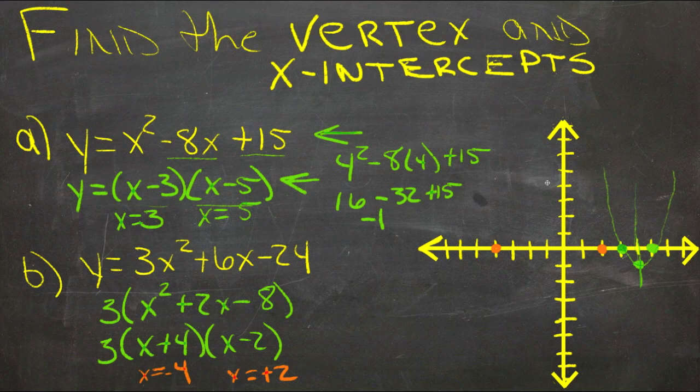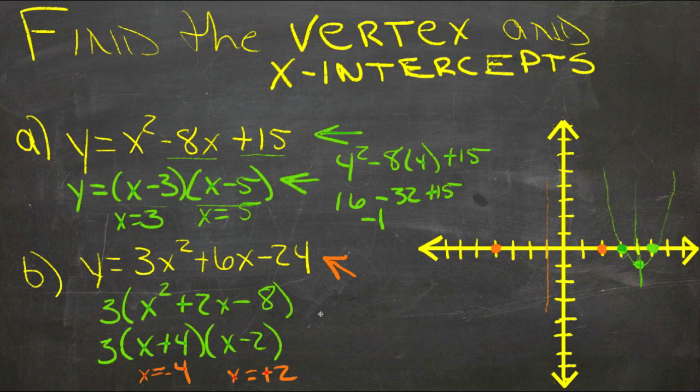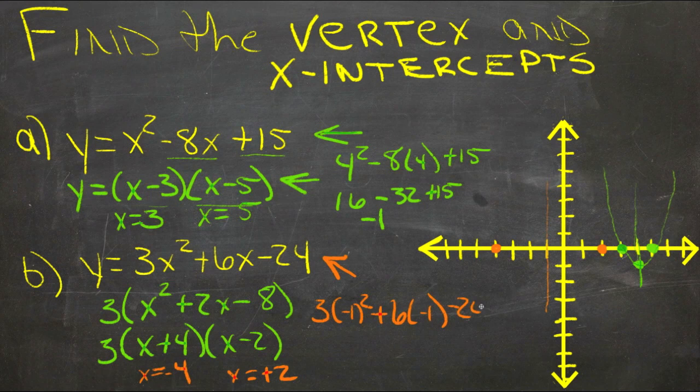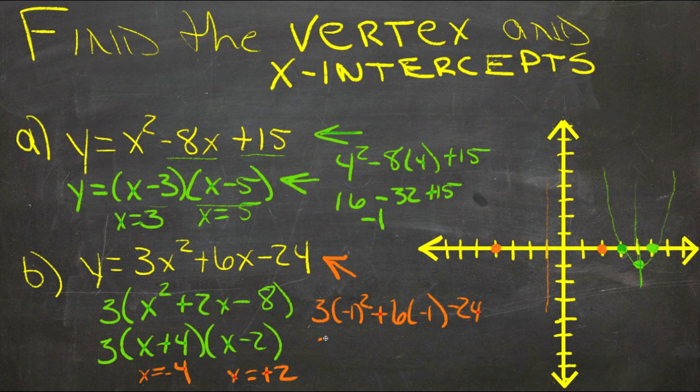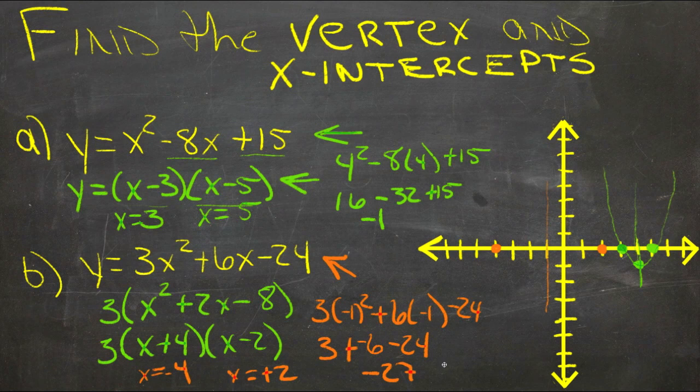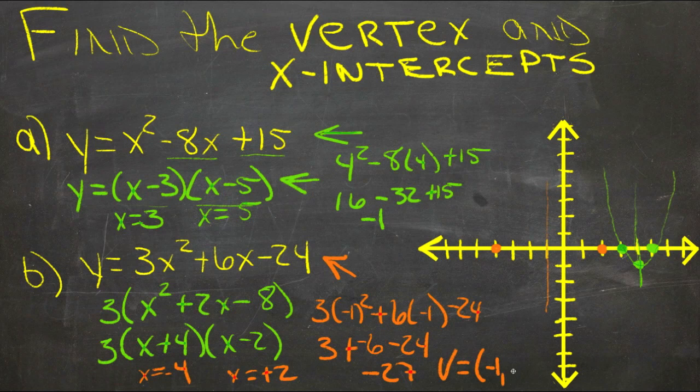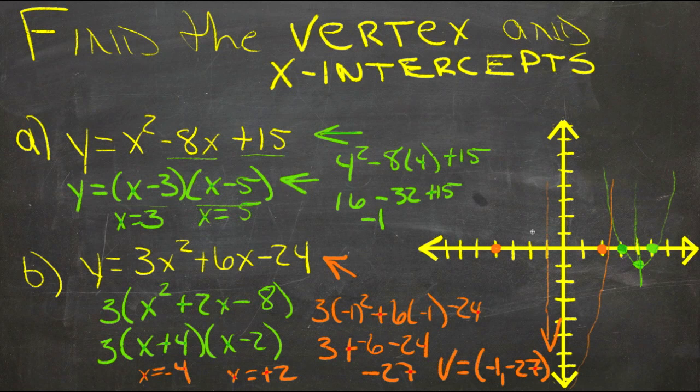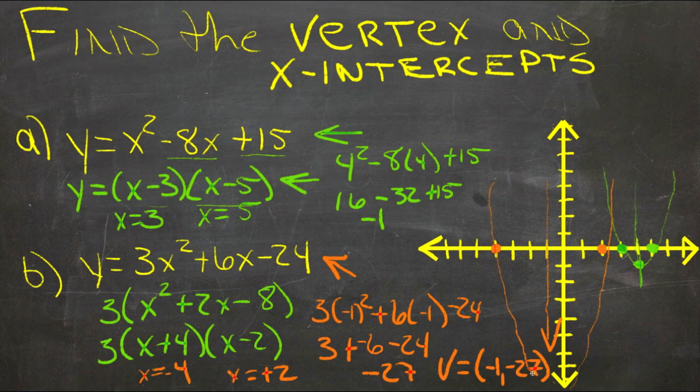Which says that our line of symmetry is at negative 1. So we put negative 1 in here for x, and we get 3 times negative 1 squared plus 6 times negative 1 minus 24. Negative 1 squared is 1, so we have 3 plus negative 6 minus 24. 3 minus 6 is negative 3, minus 24 more is negative 27. So our vertex then is at negative 1 comma negative 27, which of course is way down off the bottom of our graph down there somewhere. But that's where the vertex will be, and from that point on, that parabola will go up this way very generally, and this way very generally.